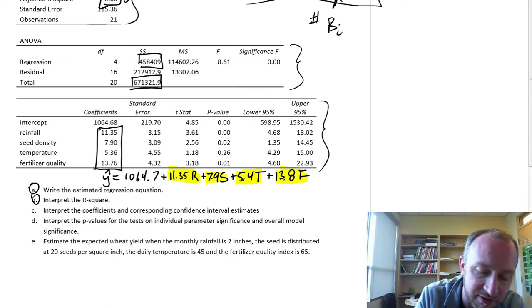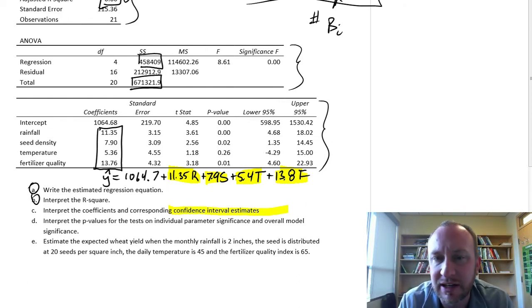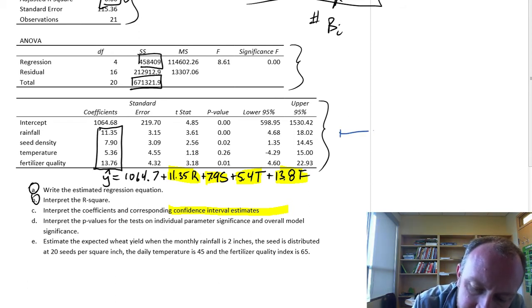Now, if we look at the confidence interval estimates, it's a very similar interpretation to any other confidence interval that we've done throughout all of these videos. If I look at rainfall, we have that point estimate is in the middle, and we have 18.02 up here, and 4.7 here.